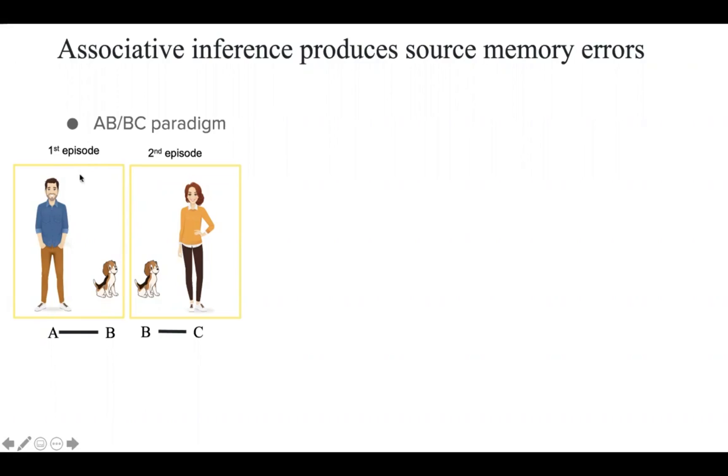For example, in the AB/BC paradigm, you might see a man running a dog in one episode, and in another episode, you might see a woman running the same dog. Because of this same dog, you could infer that the man and the woman could be associated together.